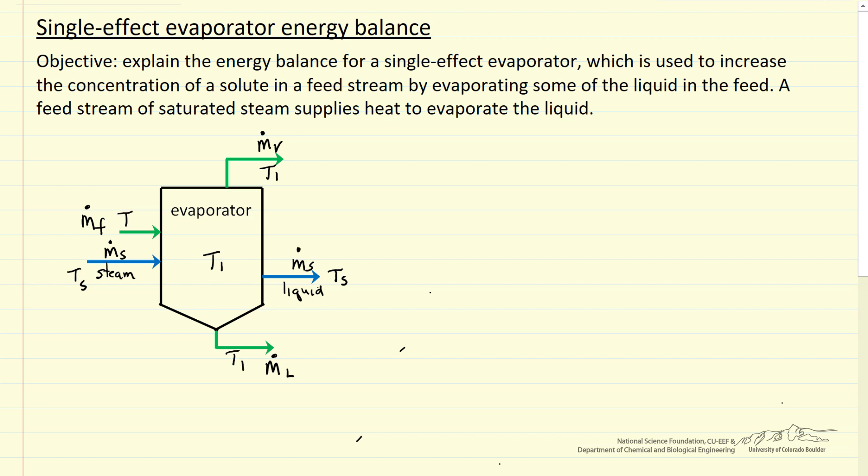The temperature of the liquid coming in is T_feed. The mass fraction of the solute will be X_F, and leaving will be a higher mass fraction we'll call X_L. The mass balance we're going to need is that the mass flow rate of the liquid coming in equals the mass flow rate of vapor leaving plus the mass flow rate of the concentrated liquid leaving.